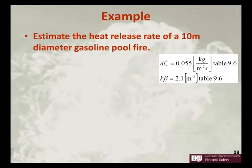So we can say, heat release rate is equal to the chi efficiency term times our mass loss flux times the area of the pool times the heat of combustion.